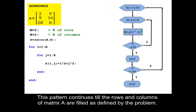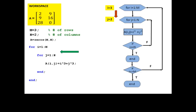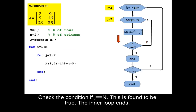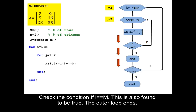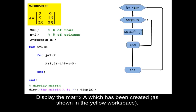This pattern continues till the rows and columns of matrix A are filled as defined by the problem. For the last iteration I equals 3, third row, and J equals 2, second column. Compute the element in the third row, second column of matrix A, position (3,2), as 3 cubed plus 2 cubed equals 35. Check the condition: if J is equal to N, this is found to be true. The inner loop ends. Check the condition: if I is equal to M, this is also found to be true. The outer loop ends. Note that the if conditions are embedded in the end of the loops. Display the matrix A which has been created, as shown in the yellow workspace.